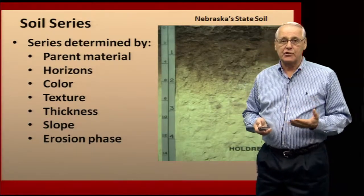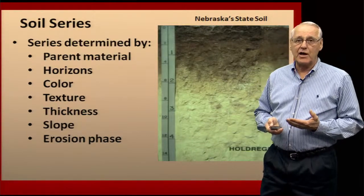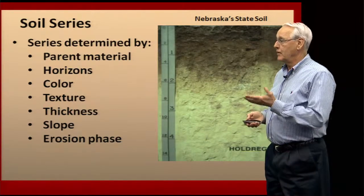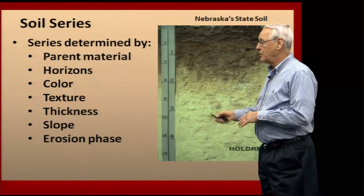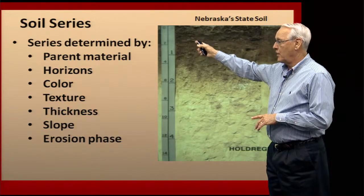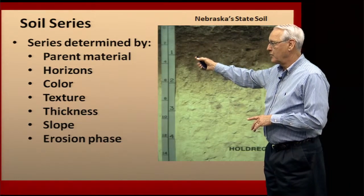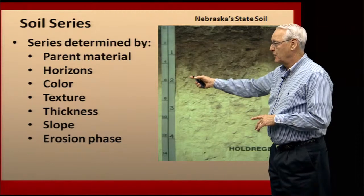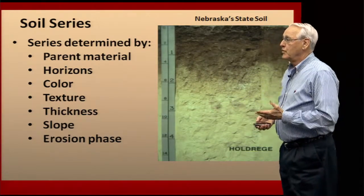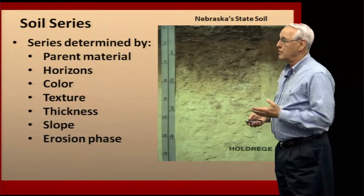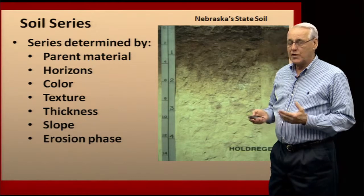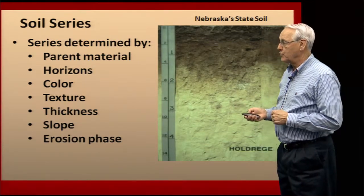The soil series is just the name of the different soils that we have in Nebraska. The soil series is determined by the parent material that you have, the different horizons. In this slide you can see the layers — the darker layer of organic matter accumulation, a transition zone, lighter material, and eventually the parent material. The soil series also has different colors, textures, thicknesses, can have different slopes, and can have different erosion phases.